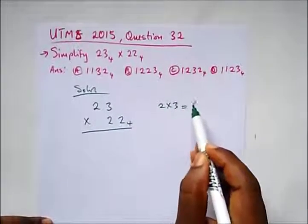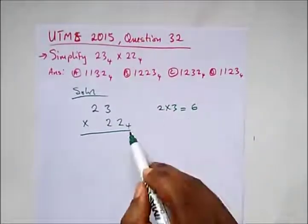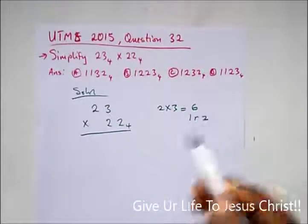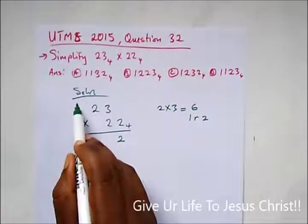We have 23, 22 multiplication in base 4. 2 times 3 will give us 6. How many times would 4 go in 6? It will be 1, remainder 2. So write 2 here, carry our 1.